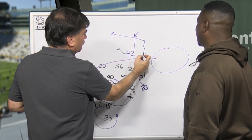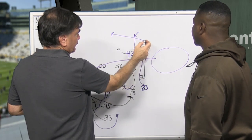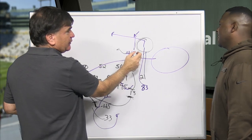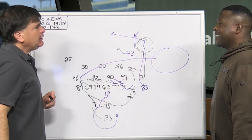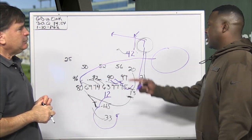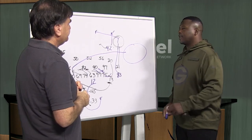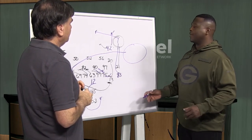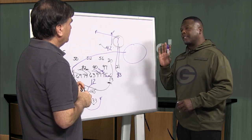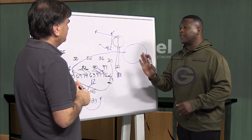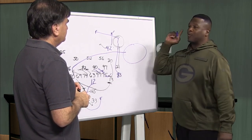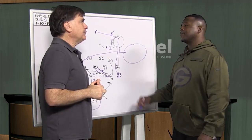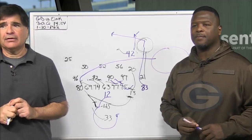The really key part about this is the move that Valdez-Scantling has to make on the safety. He reads the safety's hips: if he turns to the left, I'm going to the right; you turn to the right, I'm going to the left, and this is going to be wide open. If the guy stays in a square backpedal and has good depth, Scantling just outruns him — and now I'm clearing it for Jimmy Graham. So let's go back and look at the video.